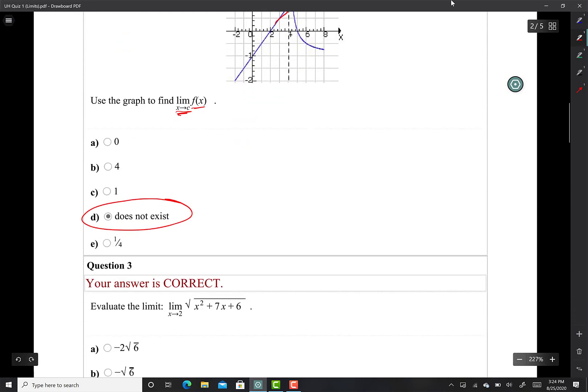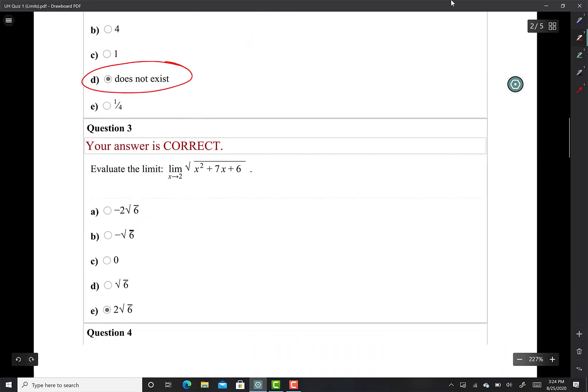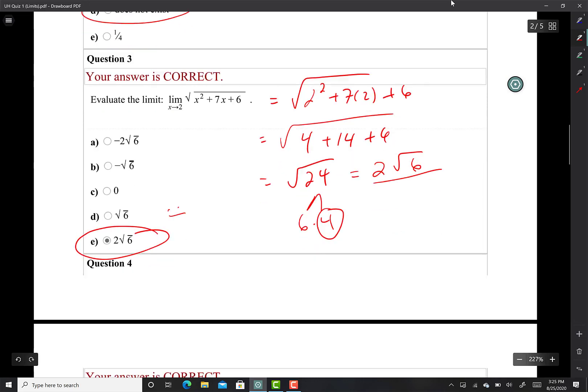Evaluate this limit. It's not a rational function, it's just a radical. You just do direct substitution. So square root of 2 squared plus 7 times 2 plus 6. That's 4 plus 14 plus 6, which is 24. Square root of 24 is the same as 6 times 4, so square root of 4 is 2. Answer is 2 square root of 6.